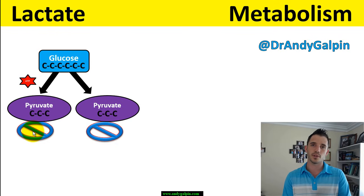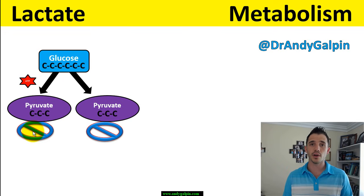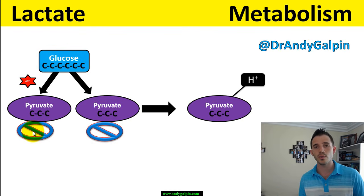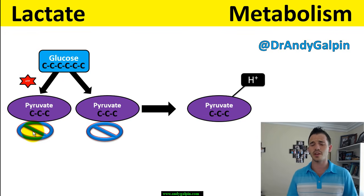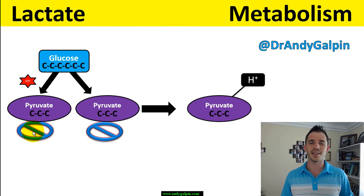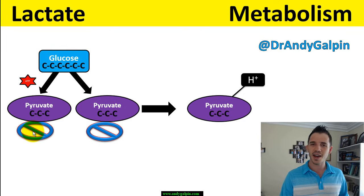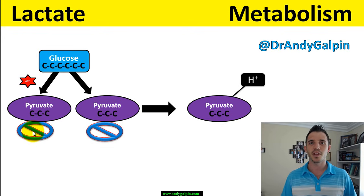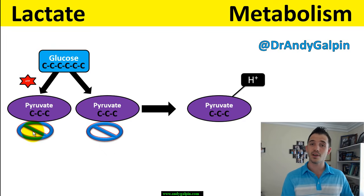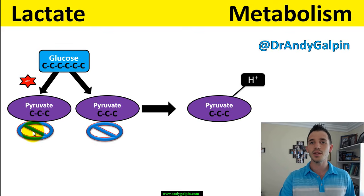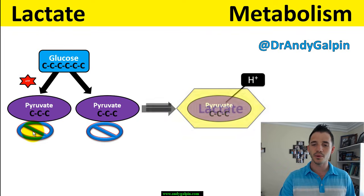Now we have to understand what hydrogen is. Hydrogen is often referred to as a proton, H+. That's acid. pH stands for potential hydrogen — if you have a lot of free-floating hydrogen, you are acidic. So you start taking your pyruvate and saying, I know I've generated a bunch of acid. Picture yourself on that awful aerodyne bike doing 20 seconds as hard as you can, 20 seconds off, 10 rounds — you generate a bunch of acid. What you can do is start attaching that acid to the pyruvate. Because it's not free-floating around, it doesn't cause an acidic environment. When we take a pyruvate and attach an H+ — a hydrogen proton — to it, we call that new molecule lactate.